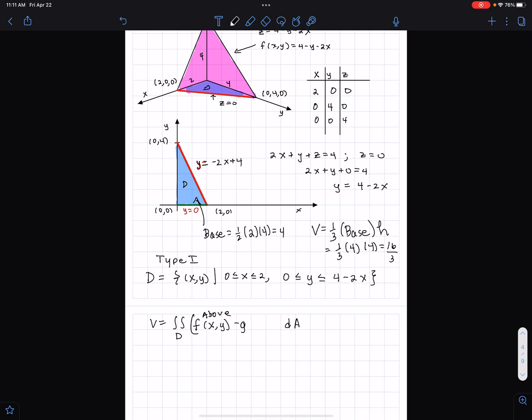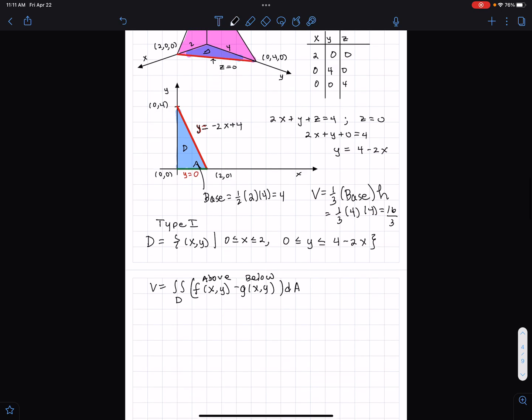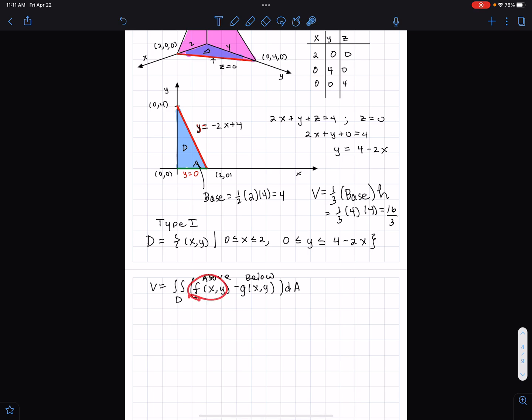In this case, below is z equals 0. So if your function, if your surface, if this function is positive over the whole interval, the integral of that function over the xy plane would just be given by that function. So anyway, if this function is 0, you don't need that, which is the case here.